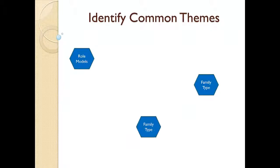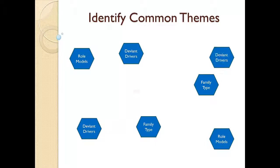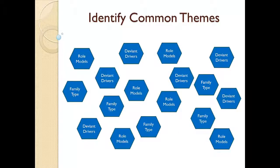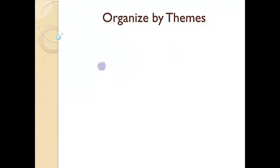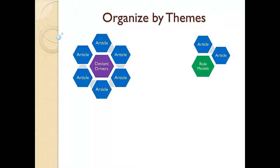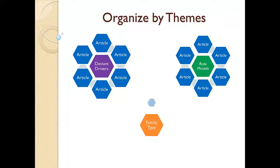As I begin reading the articles I located, common themes start to emerge. I noticed that common themes in the material I found include drivers to commit deviance, the influence of role models, and family structure or type of family. I personally think that if you can organize your material into three good theme categories, then you're on the right track to creating a good literature review. Now that I have my themes identified, I can move my articles into their group, and organize them in a way that makes sense.